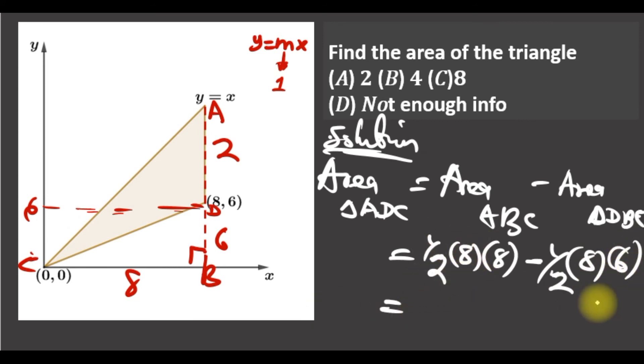And as you can see, they have common term half times 8. Half times 8 remaining is 8 here and remaining 6. So 8 minus 6 is 2, so the answer is the area is 8. Our answer is option C.